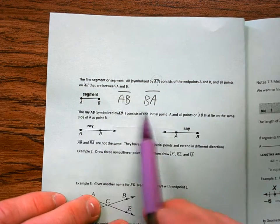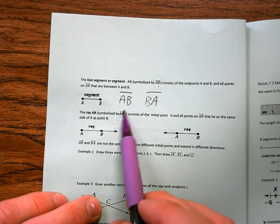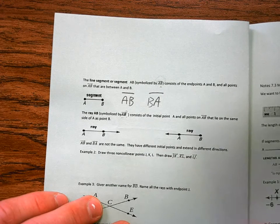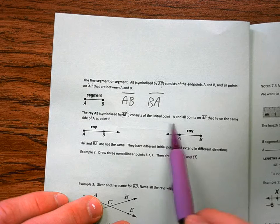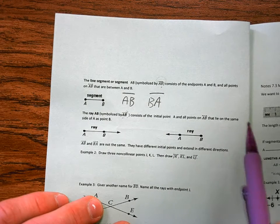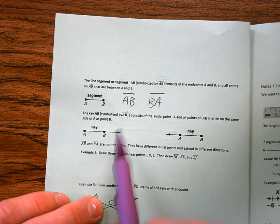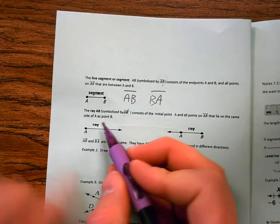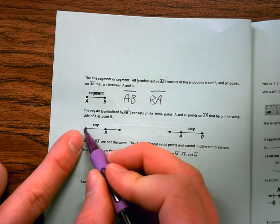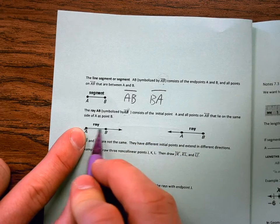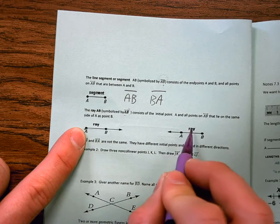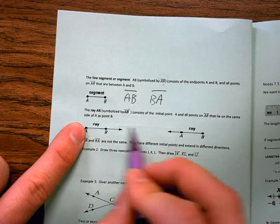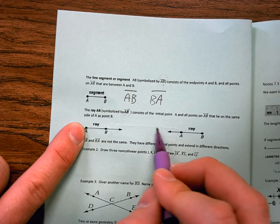Okay. The ray AB is symbolized by AB, and I have an arrow on one side, dot on the other. Consists of the initial point A, and all points on AB that are on the same side of A and B. So A stops. My ray extends forever in this direction. So any points that fall on this ray must be between A and extending in this direction. They cannot fall on this side.